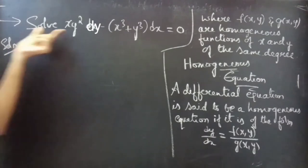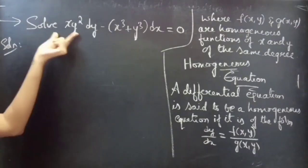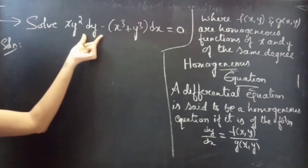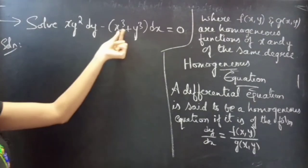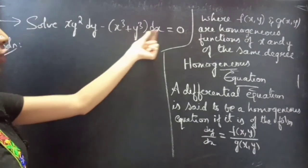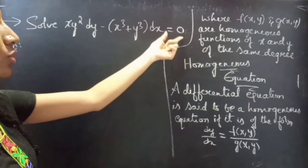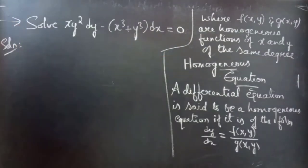Problem: Solve x y² dy minus (x³ + y³) dx = 0.